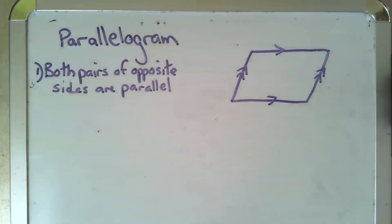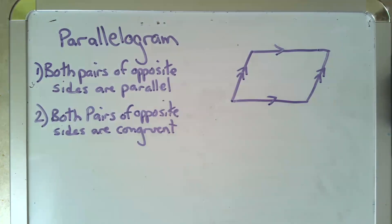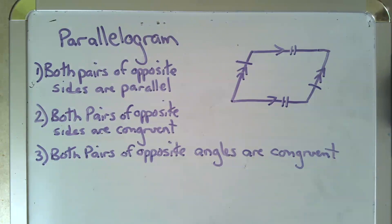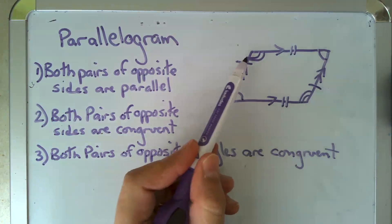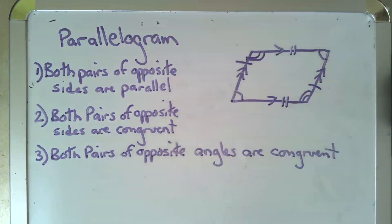The second property of parallelograms is that both pairs of opposite sides are congruent. So not only are they parallel to each other, they are also congruent to each other. That's congruent to that, and that's congruent to that. Next, we have that both pairs of opposite angles are congruent. So these two are congruent and these two are congruent.